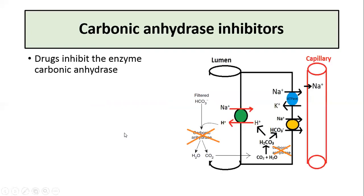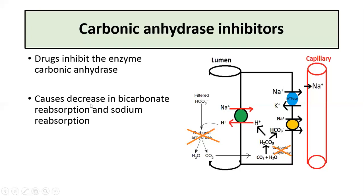Certain drugs like carbonic anhydrase inhibitors, which inhibit the enzyme carbonic anhydrase, also act as osmotic diuretics. These drugs are used in the treatment of glaucoma and acute altitude sickness. Carbonic anhydrase is critical for bicarbonate reabsorption, sodium reabsorption, and hydrogen ion secretion in the proximal tubule. Carbonic anhydrase inhibitors reduce intracellular bicarbonate and hydrogen ion concentration, causing decreased bicarbonate reabsorption and decreased sodium reabsorption. Filtered bicarbonate and sodium remain in the tubular lumen, resulting in diuresis.